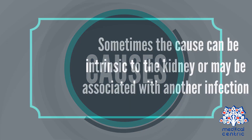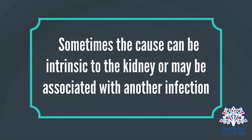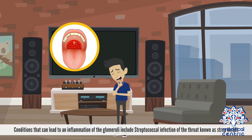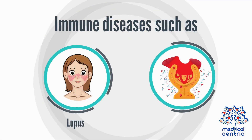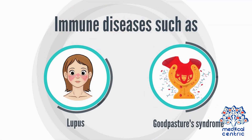Sometimes the cause can be intrinsic to the kidney or may be associated with another infection. Conditions that can lead to inflammation of the glomeruli include streptococcal infection of the throat, known as strep throat — glomerulonephritis may develop a week or two after recovery from strep throat — as well as immune diseases such as lupus and Goodpasture's syndrome.